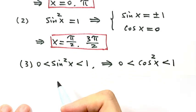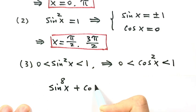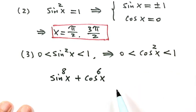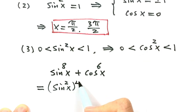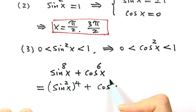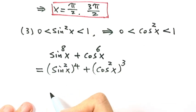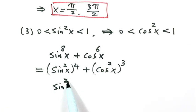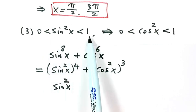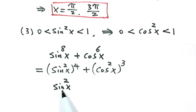Let's consider the left-hand side of the equation: sine x to the power of 8 plus cosine x to the power of 6. We can write this as (sin²x)⁴ plus (cos²x)³. Now compare (sin²x)⁴ with sin²x. Since sin²x is strictly between 0 and 1, the higher the power, the smaller the value. So (sin²x)⁴ is less than sin²x.